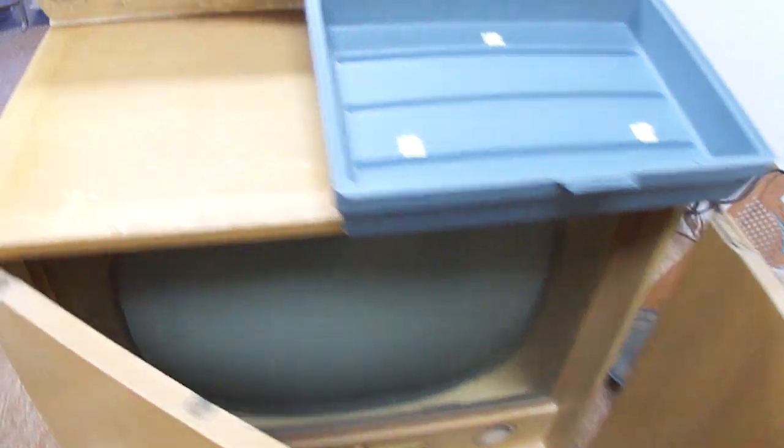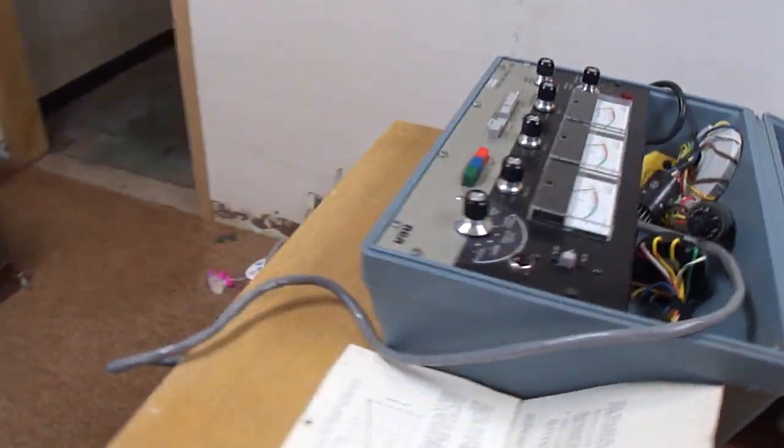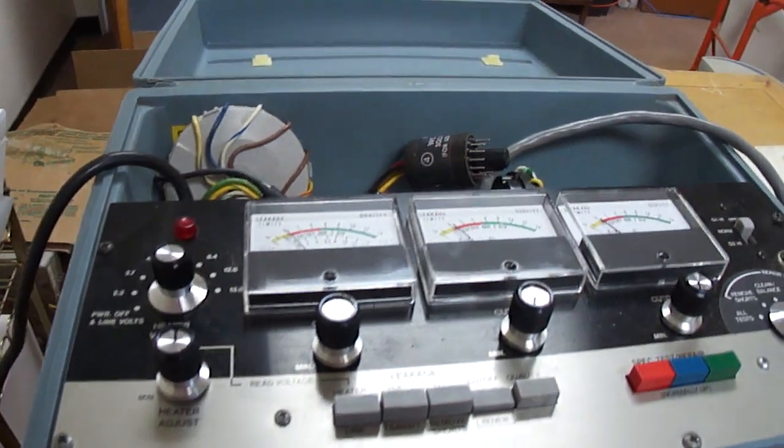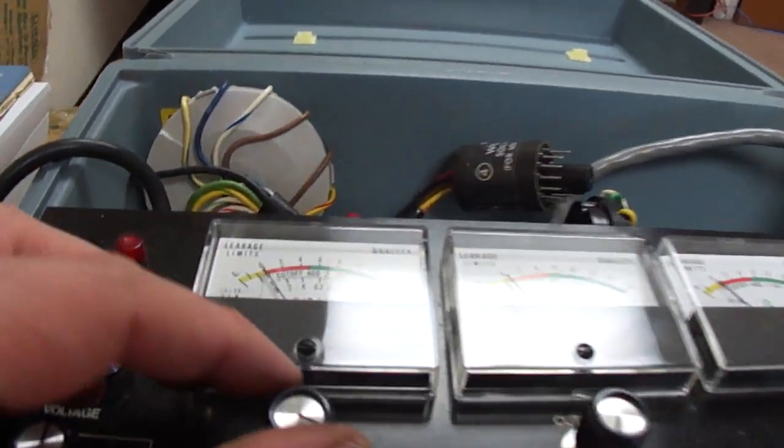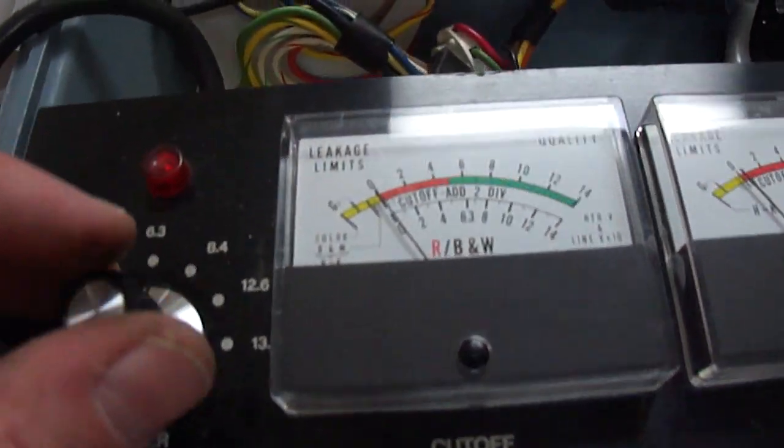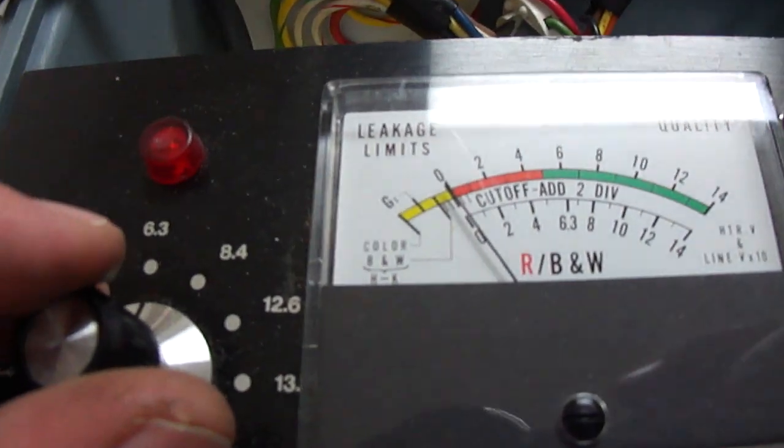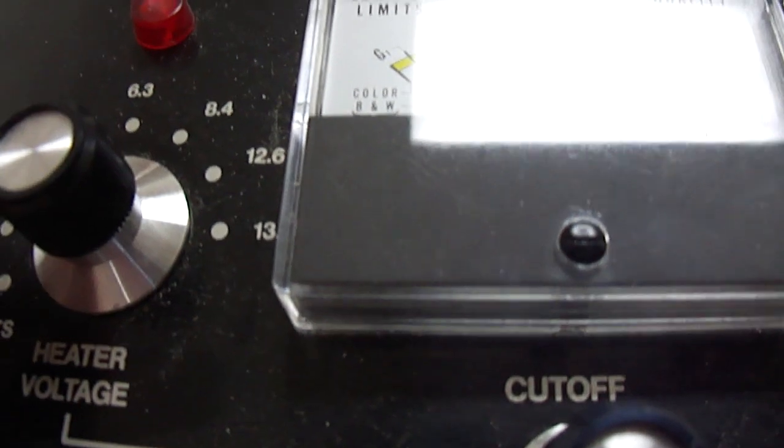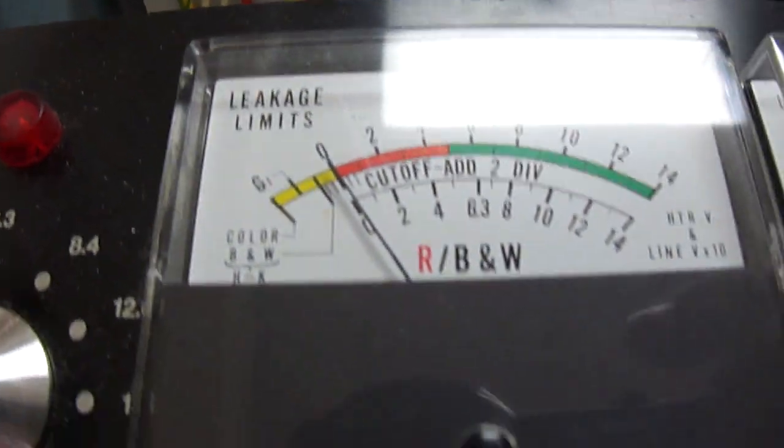I've got it on the CRT tester. I did a little bit of rejuvenation a little bit ago, and let's see what it's doing here. It seems like it's kind of intermittent. I was having trouble getting the cutoff to advance at all, so I boosted up the filament voltage.